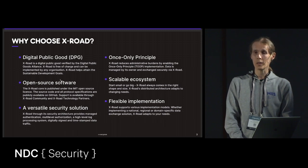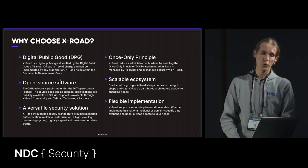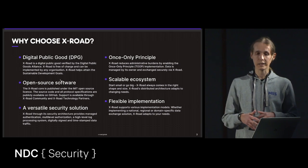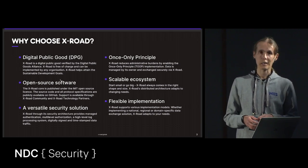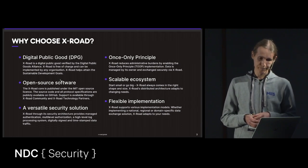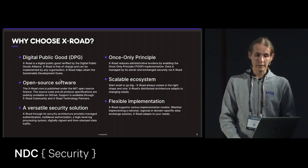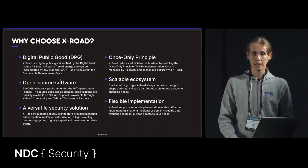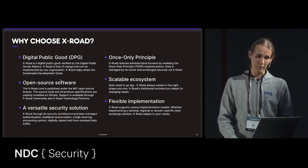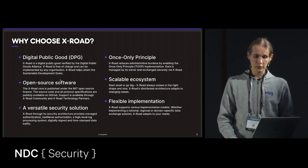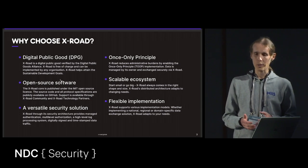The once-only principle means that citizens should provide their data to public authorities only once. Then, if another authority needs the same data, the data is exchanged between the public authorities — meaning the citizen doesn't need to provide their address multiple times to different authorities. XROAD is also very scalable: you can start small or go big immediately. It is based on a decentralized architecture, making it easy to scale.